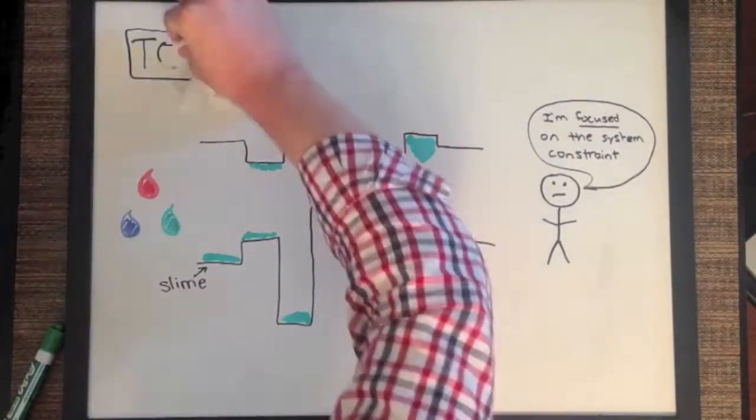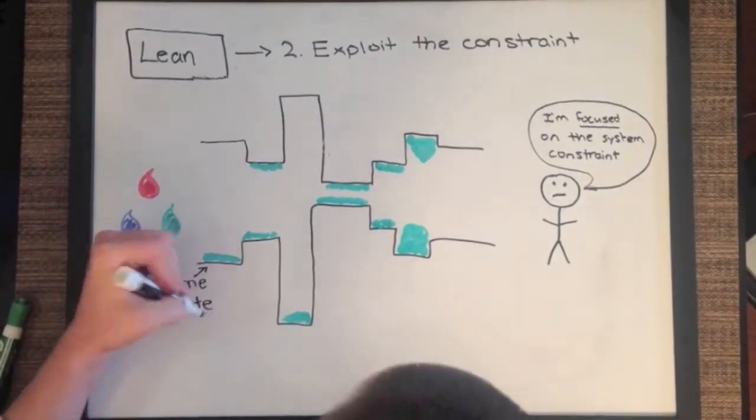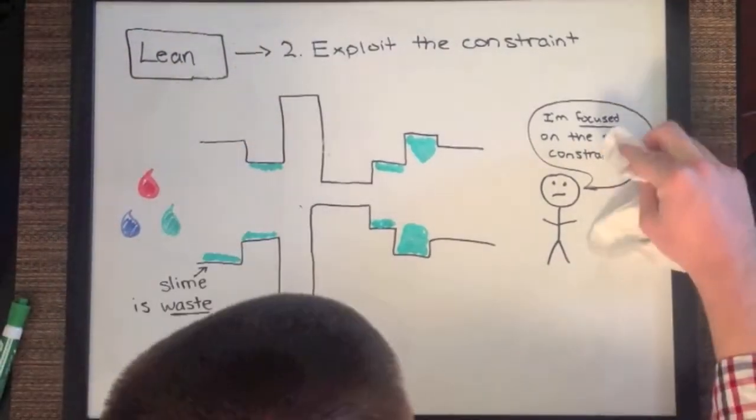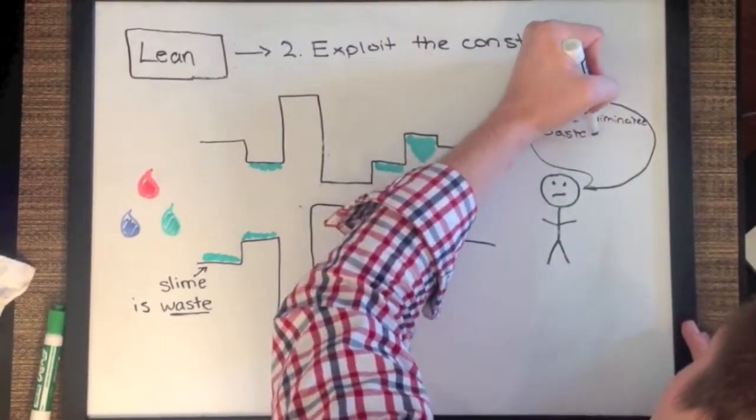Now that you are focused on the constraint, you use Lean to exploit the constraint. In this example, the slime deposits at the narrowest part of the pipe are wasteful. Lean is the pipe cleaner that removes the slime. We focus on the constraint because removing slime from the wider areas will not have an impact on overall throughput.